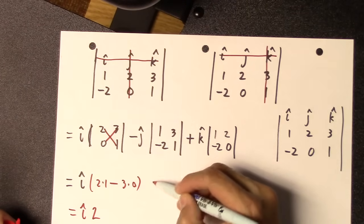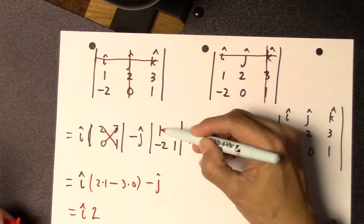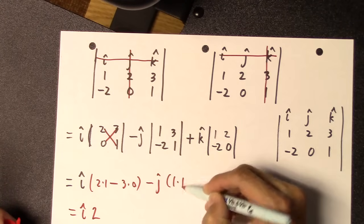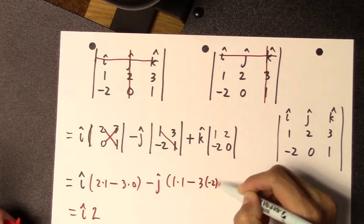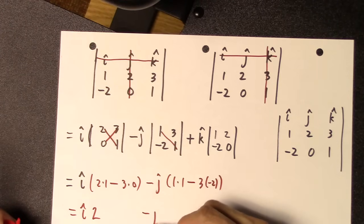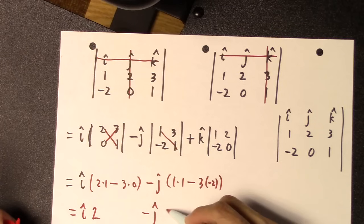Then you go to the next term. Multiply the 1 times 1, that's like this, minus 3 times negative 2. And that's going to give you 1 plus 6, or 7.